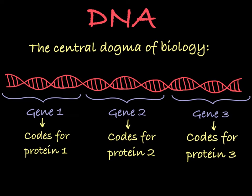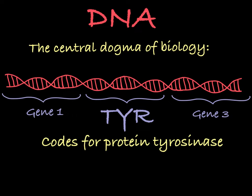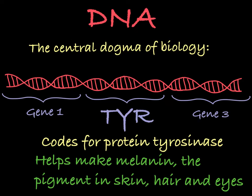For instance, you have a gene called TYR that encodes the protein tyrosinase, which is an enzyme that helps build melanin, the pigment that creates your skin color.